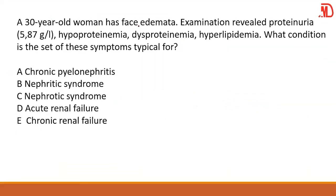A 30-year-old woman has faced edema. Anytime you hear of edema, four important organs come to mind: the heart, the liver, the kidney, and the GIT — that's malabsorption. These are the four major organs that, when there is a problem, can lead to edema formation.